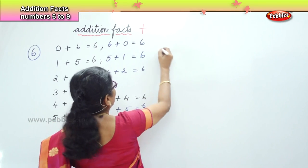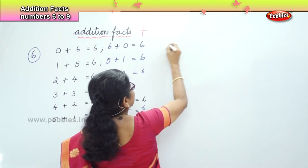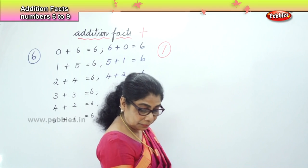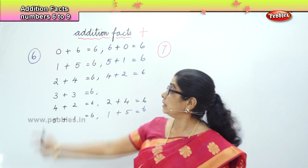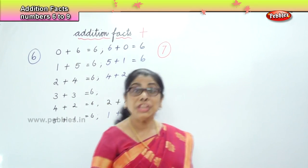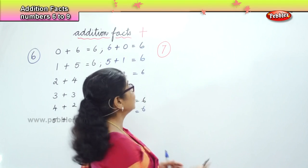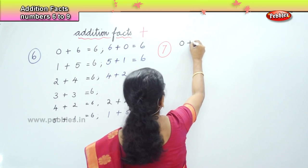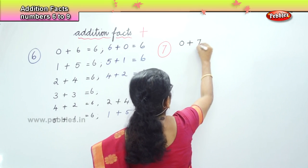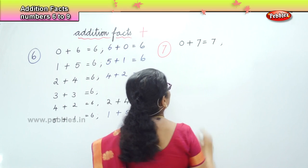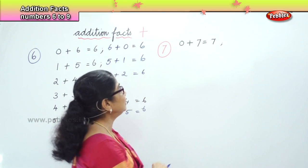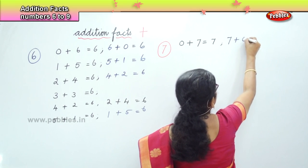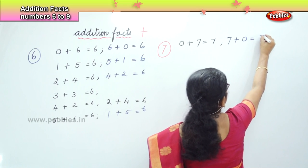Now let us look at the number combinations — the addition facts of 7. What are the addition facts, the number combinations in 7? Again we begin with 0 plus 7 equal to 7. And the reverse: 7 plus 0 is 7.